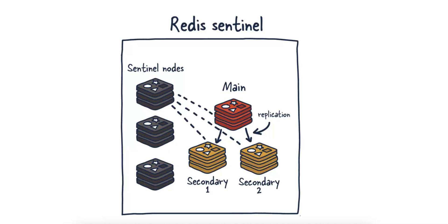Sentinel constantly monitors the master and slave instances to check their health. If the master goes down, Sentinel detects the failure. If the master is unreachable, Sentinel promotes one of the slaves to be the new master. Sentinel also informs Redis clients about the new master, so they can automatically connect to the new master instance.